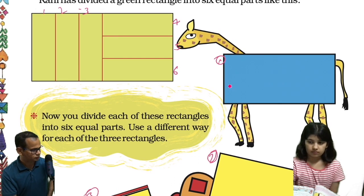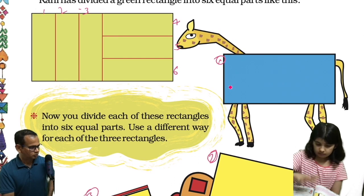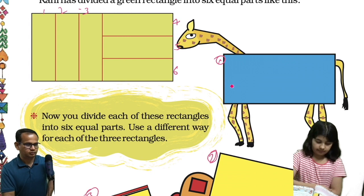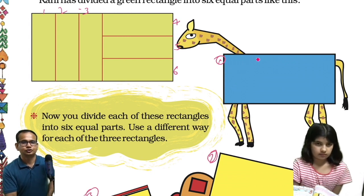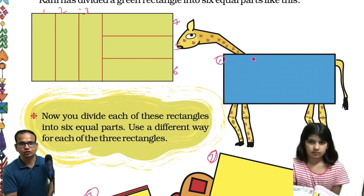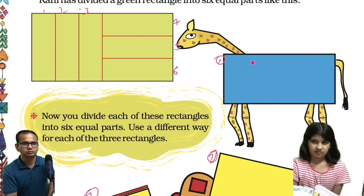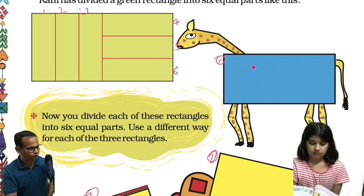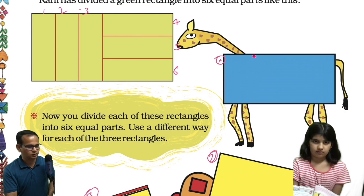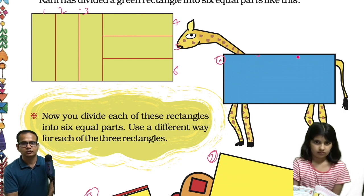Already done? Show me. Oh, like this? Shall I also draw it my way? One, two, three, four, five, six. Okay, good. Nice. You have done nicely, Avisha. I'll do the same thing — equal parts, this one.